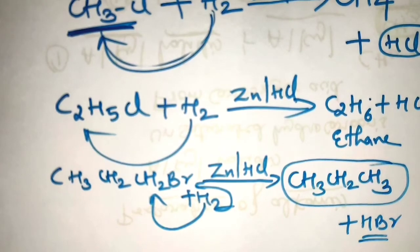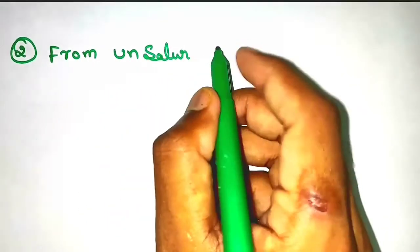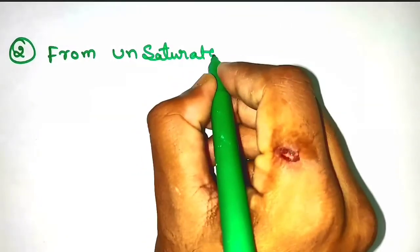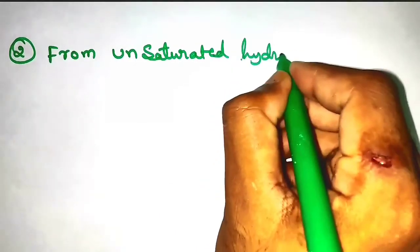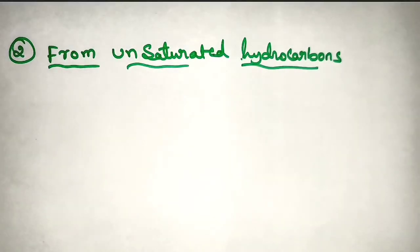Like this you can take many other examples and practice. I hope you understand the preparation of alkanes from alkyl halides. Moving to the second method: preparation of alkanes from unsaturated hydrocarbons, that means alkenes and alkynes.